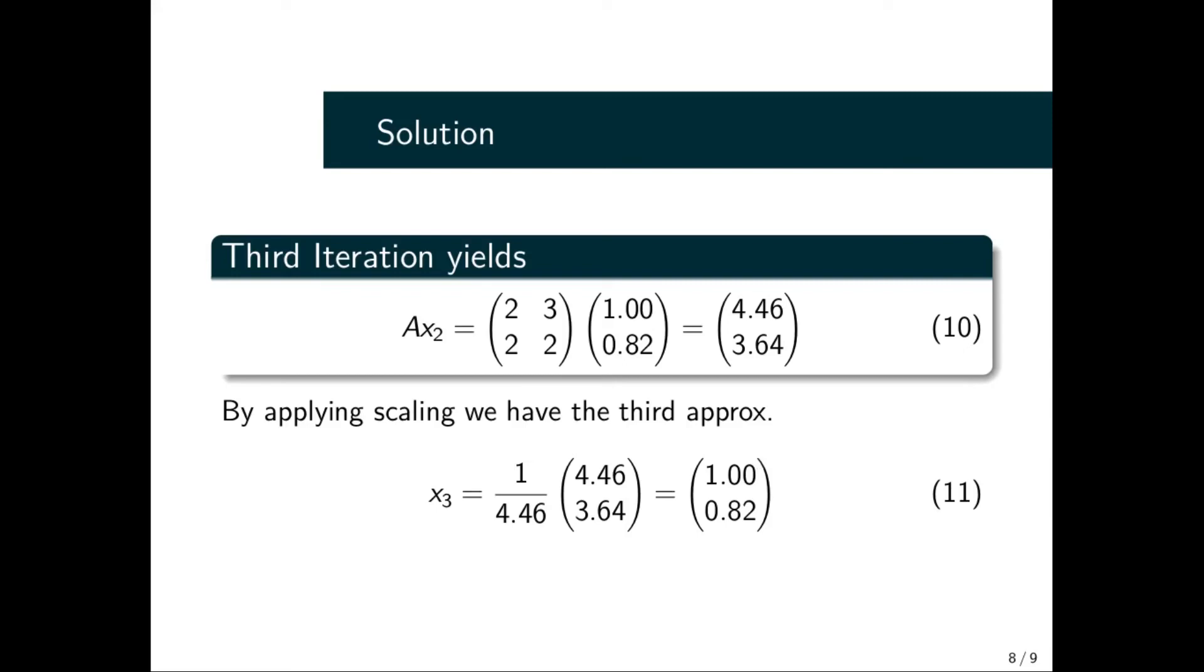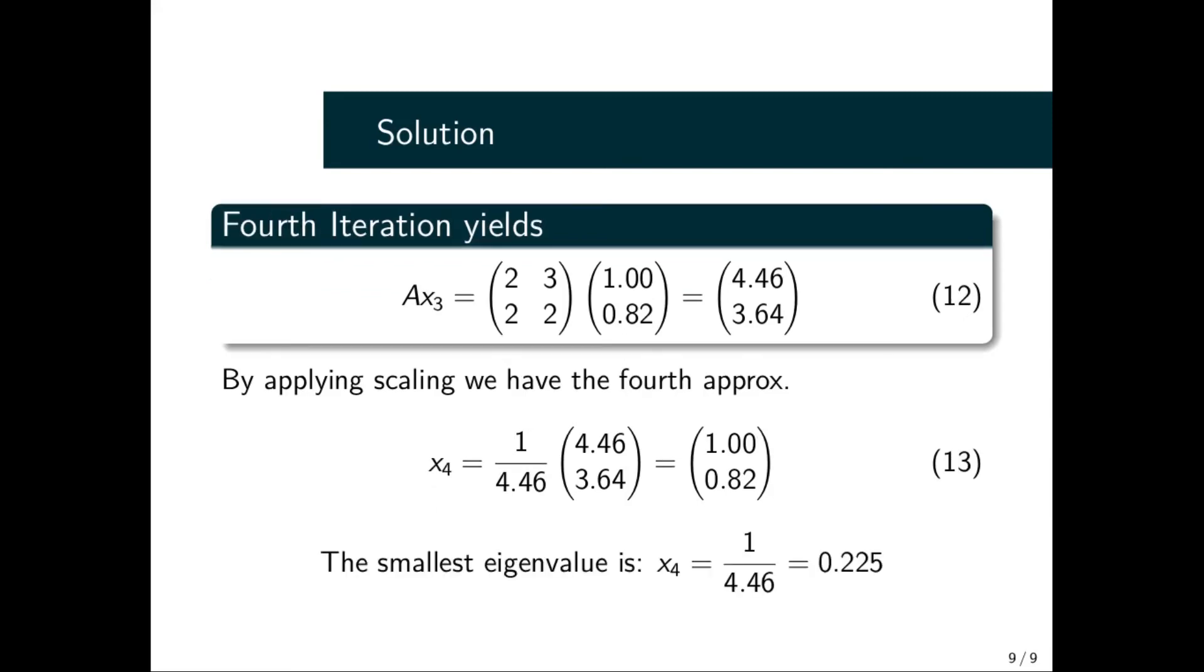For x₃, we perform our fourth iteration the same way. We apply A times x₃, which gives us equation (12). We consider the maximum value, and we can see we obtain the same thing over and over again. Looking at this, if we should go ahead and do the fifth iteration, we are going to arrive at the same thing. So based on this result, we can now conclude.